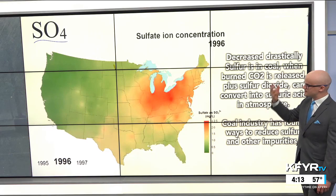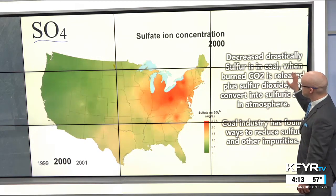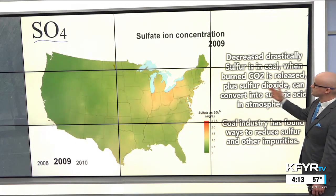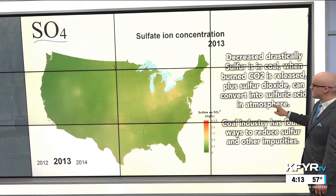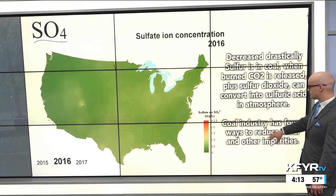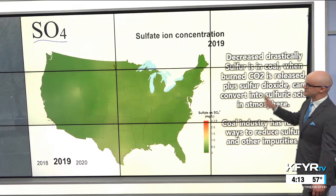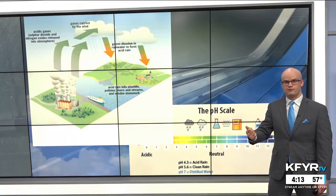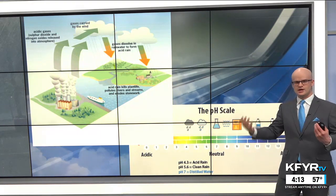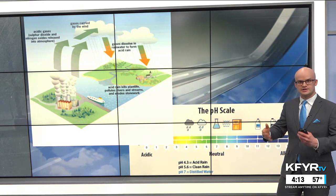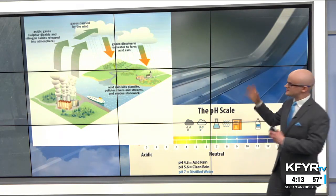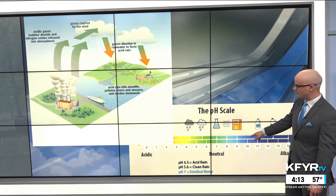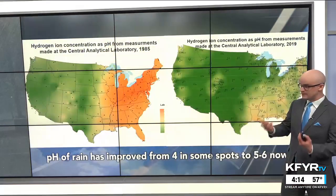Focusing on sulfate and the trends over time, you can see that the concentration of deposition coming down to the ground has decreased drastically since the 1980s. Sulfur is in coal, and when it's burned, sulfur dioxide is released, which can convert into sulfuric acid in the atmosphere. Fortunately, the coal industry has found ways to reduce sulfur and other impurities. This decrease also lessens the chances of acid rain — that was the whole starting point of the NADP organization, created in response to the Clean Air Act.